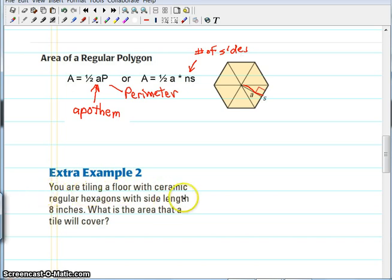In our example here, we're tiling a floor with ceramic regular hexagons. Often tiles do come in regular polygon shapes. Now the side length is eight inches. So we have S equal to eight. What's the area the tile will cover? So we can go ahead and figure out what the perimeter of this polygon is. We have six sides.